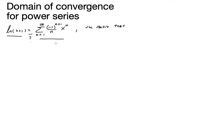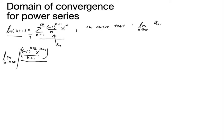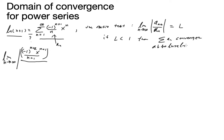Those are the a_n coefficients. We're going to write the limit as n goes to infinity of the absolute value of negative 1 to the n plus 2 times x to the n plus 1, all over n plus 1. The ratio test is: take a_(n+1) over a_n in absolute value, and that equals L. If L is less than 1, then the series converges absolutely.